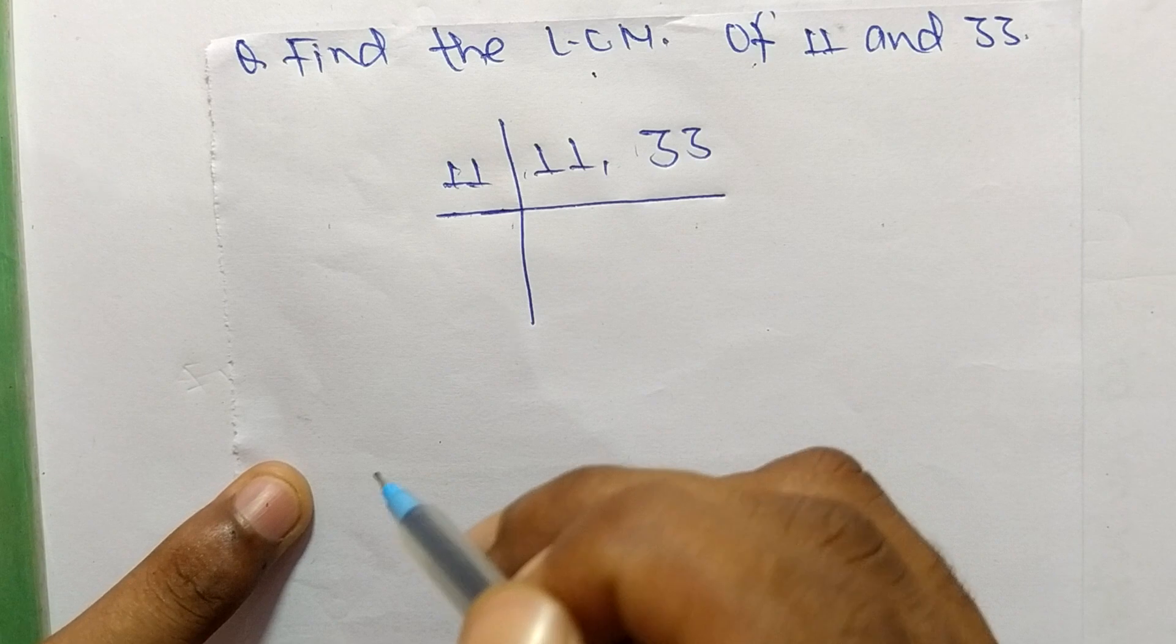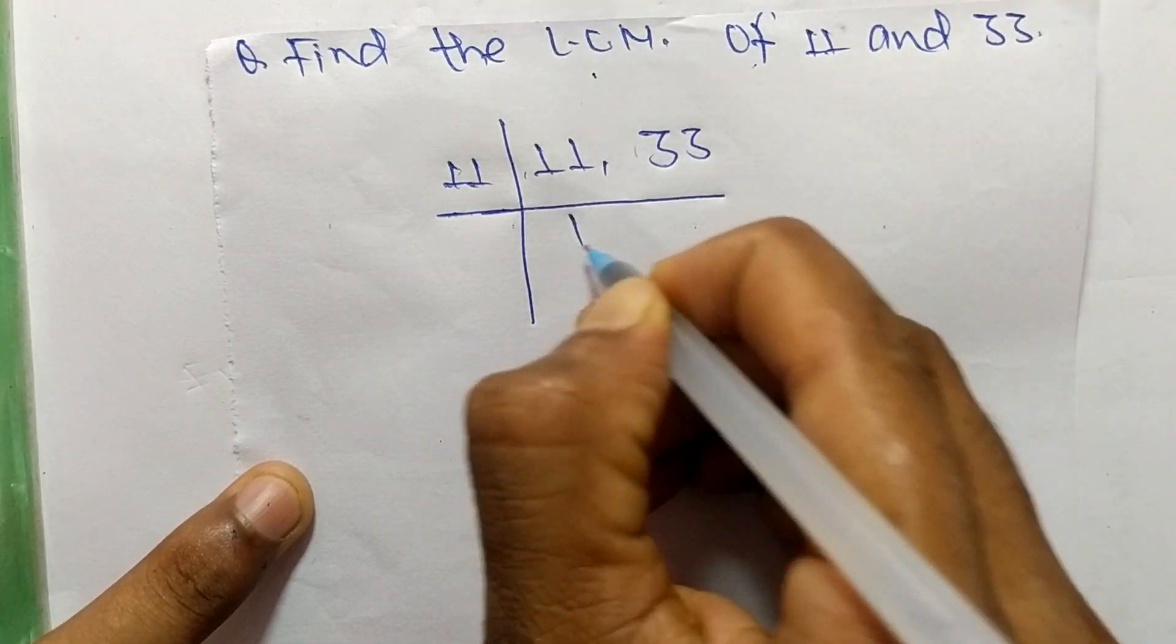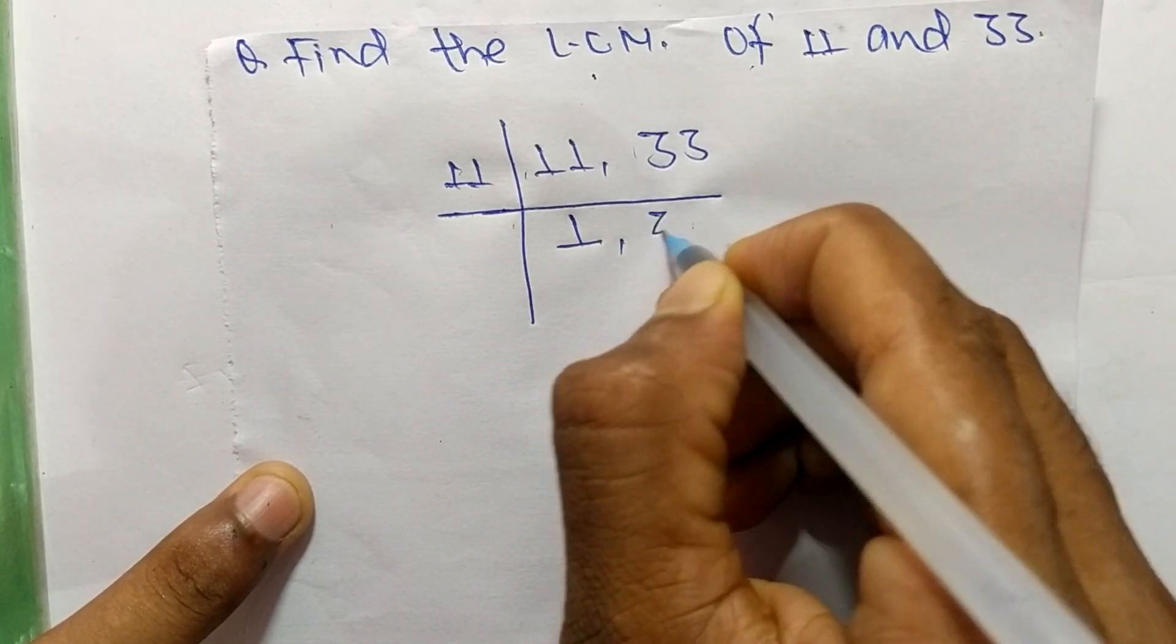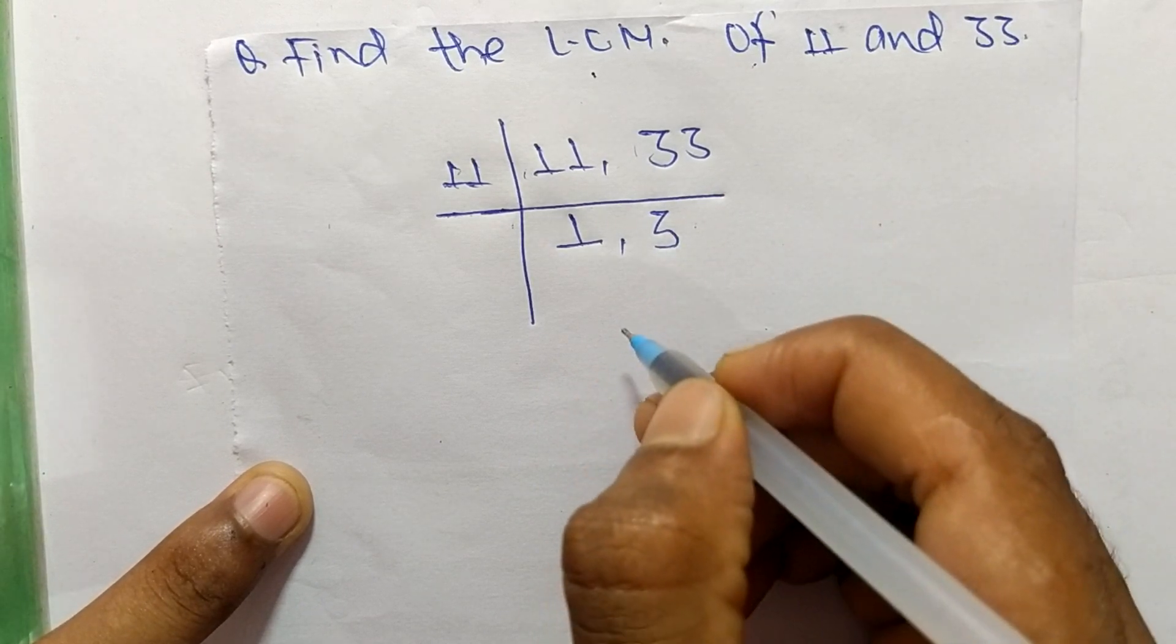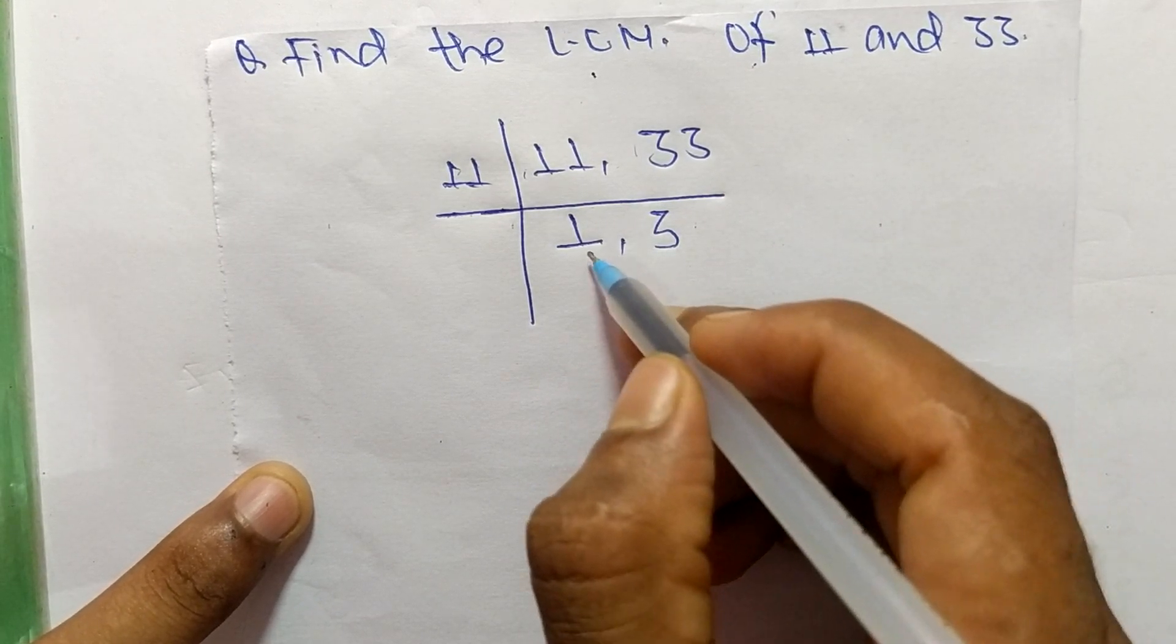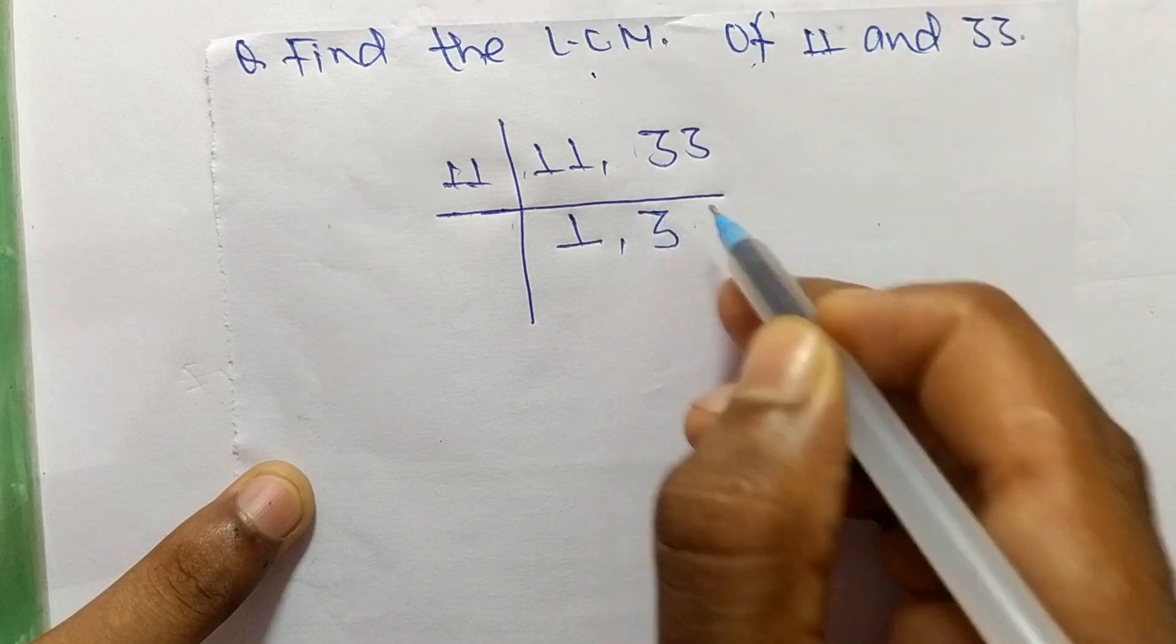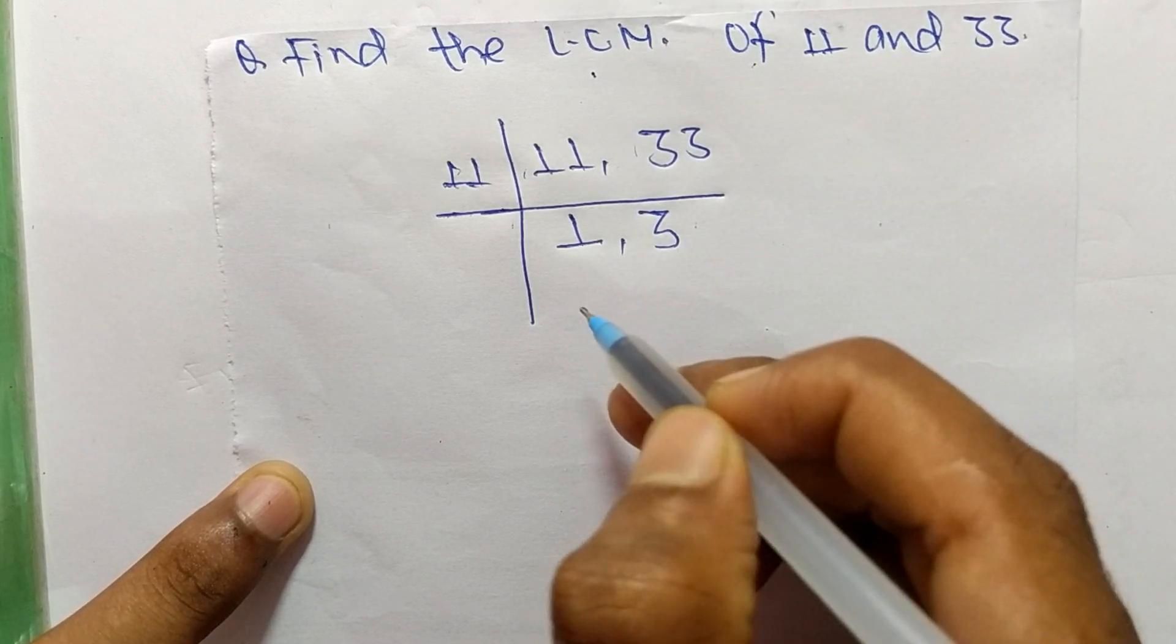So we take here 11. 11 times 1 equals 11 and 11 times 3 equals 33. Now we get here 1 and 3 which are not exactly divisible by the same number.